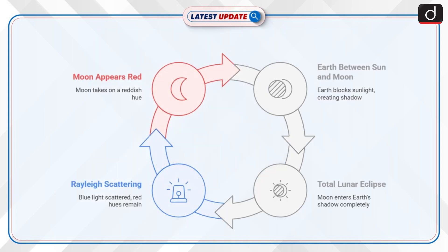Now let's discuss what is a blood moon. A blood moon occurs during a total lunar eclipse when the Earth is directly between the sun and the moon. Rayleigh scattering causes shorter blue wavelengths to scatter, allowing red and orange hues to reach the moon. This effect is similar to the colors seen during sunrise and sunset.